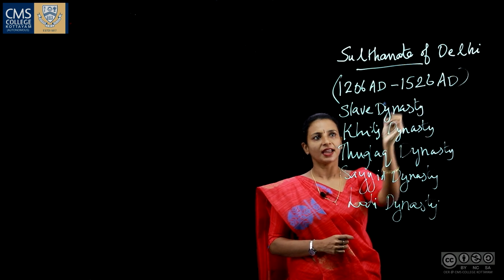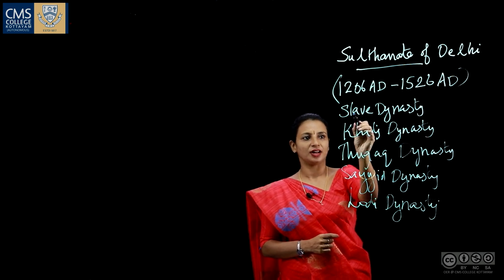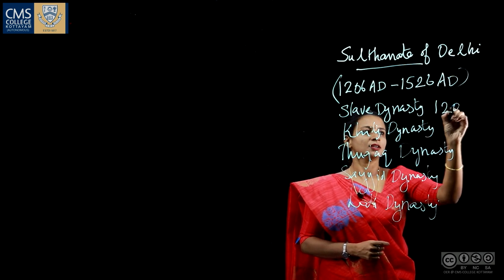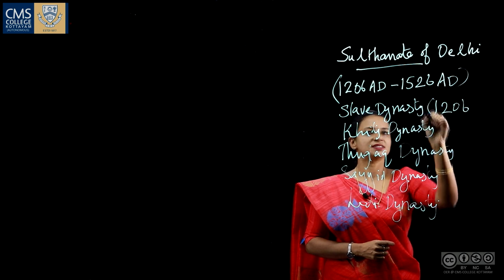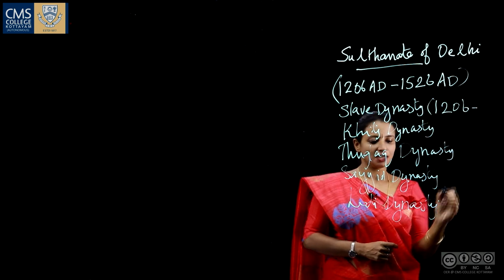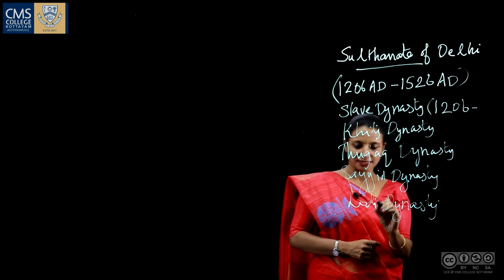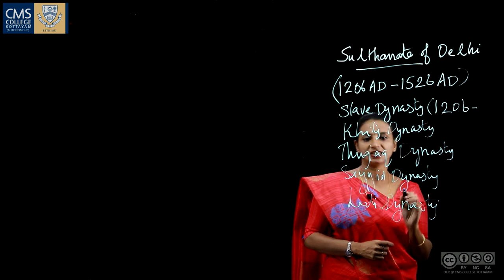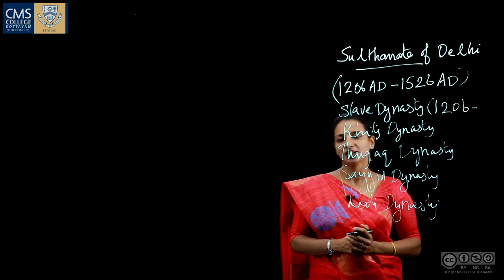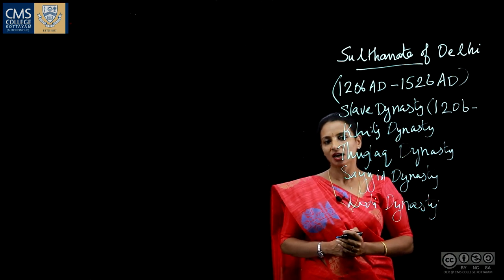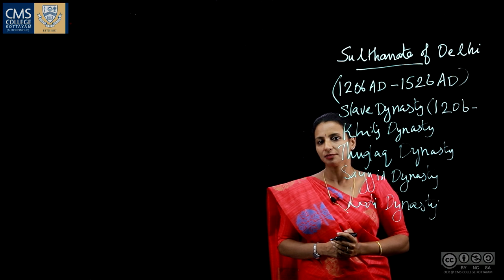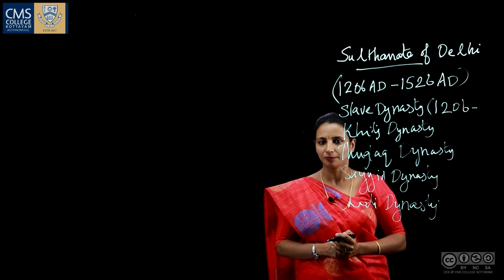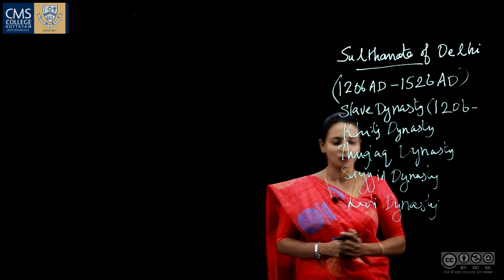The Sultanate of Delhi began with the Slave Dynasty in 1206 AD and ended with the Lodhi Dynasty. The last Lodhi ruler, Ibrahim Lodhi, was defeated by Babur in the famous First Battle of Panipat in 1526.